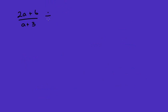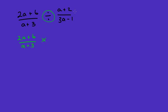Now for a division question: (2a + 6) over (a + 3) divided by (a + 2) over (3a − 1). This is more challenging because we have expressions on the bottom, but it works the same way. We don't like dividing fractions, so we turn the division sign into a multiplication sign and find the reciprocal — flip the second fraction upside down.